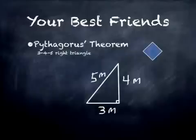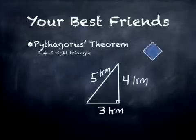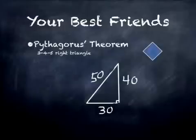You will see many examples of 3-4-5 right triangles in this course. It doesn't have to be meters — it could be 3 kilometers, 4 kilometers, and 5 kilometers. It doesn't actually even have to be 3, 4, 5, as long as the ratio is maintained. It could be 30, 40, and 50 — the same as saying a triangle scaled up by a factor of 10.